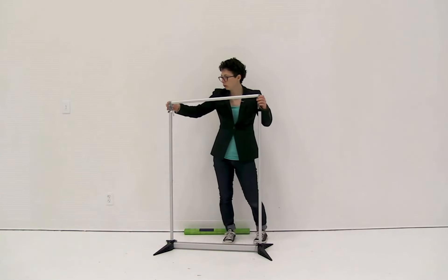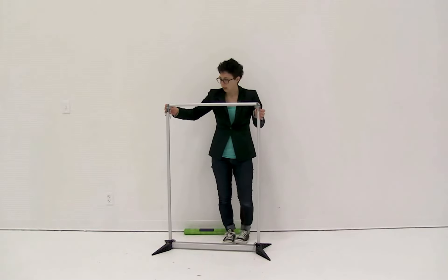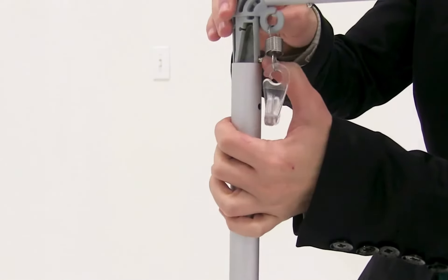I'm just going to slide the corner piece into both poles at the same time and then using the snap button secure it into place.